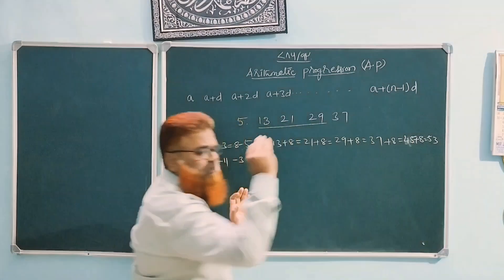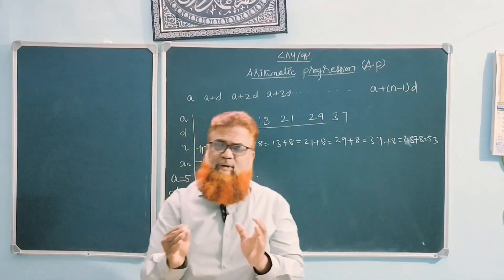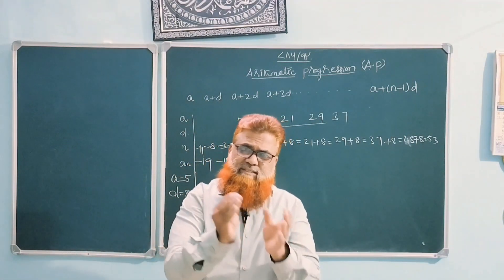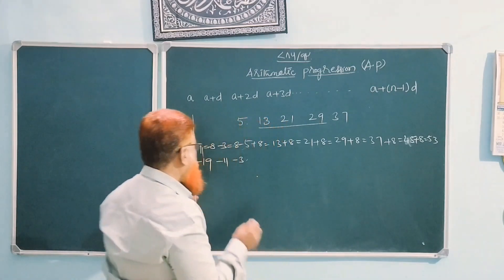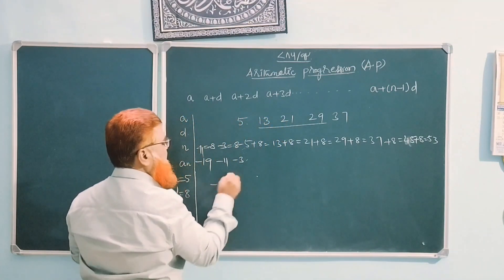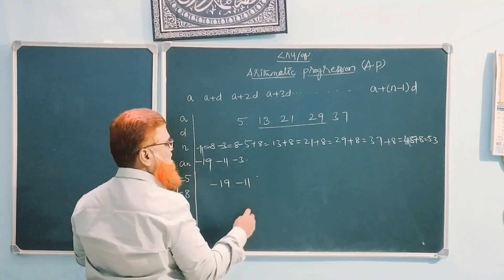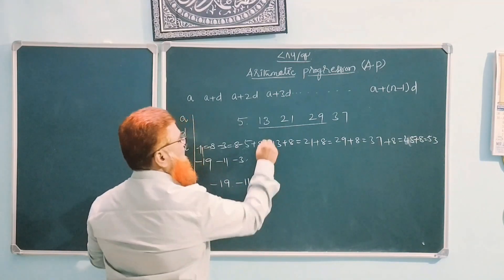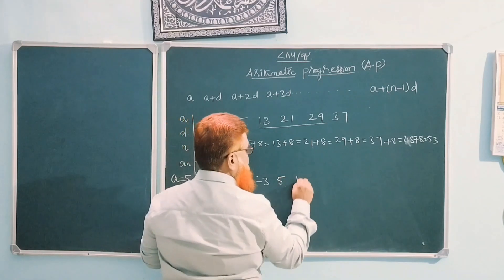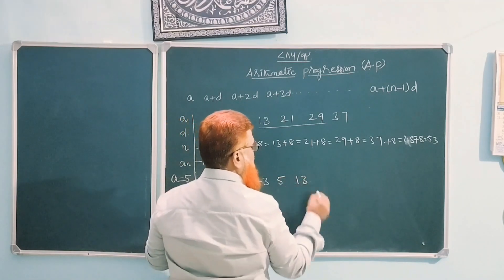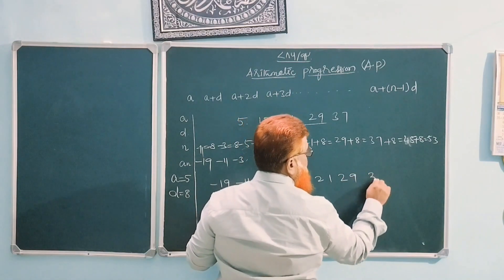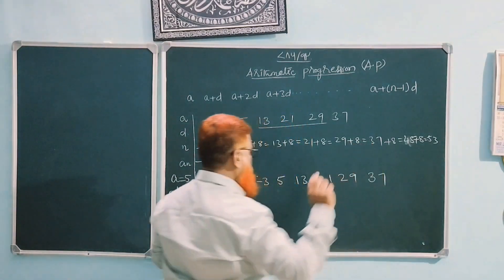Let me write the complete sequence of the AP: …−19, −11, −3, 5, 13, 21, 29, 37, and so on.